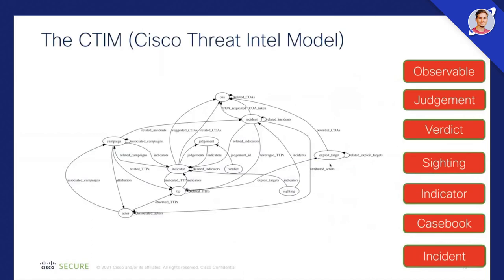An important piece without going into too much detail is CTIM — probably one of the most important foundations of SecureX. CTIM stands for Cisco Threat Intelligence Model, and this is basically a data model that allows us to describe threat intelligence. You'll probably hear me say 'observables' — an observable can be a domain name, IP address, etc. All of these data objects can have a relationship with observables, or observables can be a part of those objects.